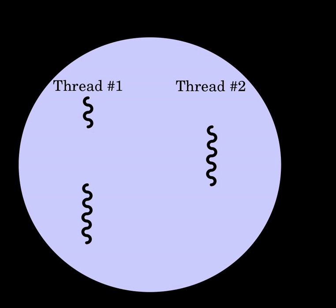Although threads seem to be a small step from sequential computation, in fact they represent a huge step. They discard the most essential and appealing properties of sequential computation — understandability, predictability, and determinism. Threads, as a model of computation, are wildly non-deterministic, and the job of the programmer becomes one of pruning that non-determinism.